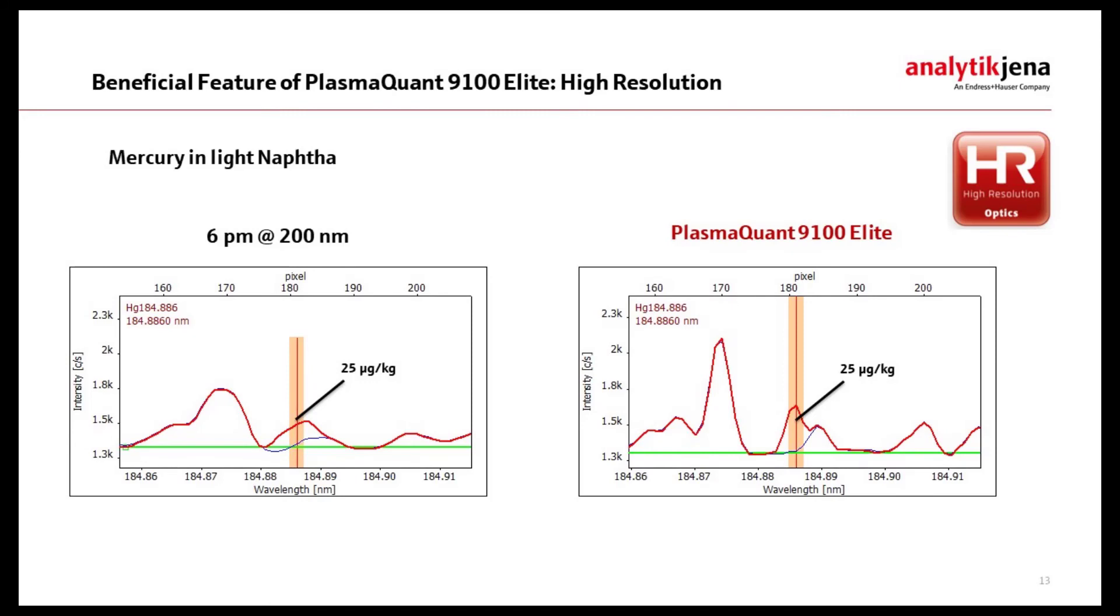Additionally, an internal neon correction ensures a wavelength accuracy of less than 0.4 picometer without laborious calibration procedures and allows for a system readiness within 15 minutes.